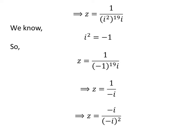As multiplying the numerator and the denominator of a fraction by a common factor does not change the value of the fraction, let us multiply the above fraction by minus i. This gives us z is equal to minus i upon square of minus i.